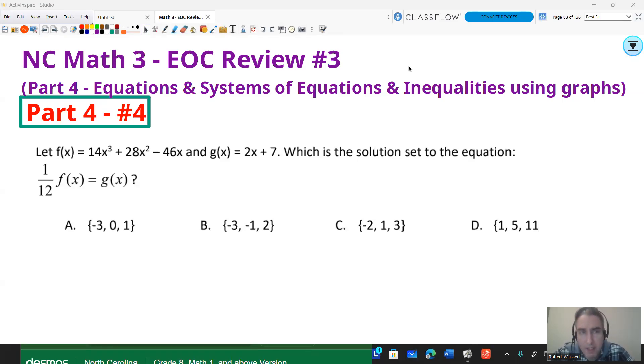Number four, let f(x) equals 14x³ + 28x² - 46x and g(x) equals 2x + 7. What is the solution set to the equation 1/12 f(x) equals g(x)? Now that is multiplied, so really I'm doing 1/12 times that, and I want to set it equal to this. Once again, I want to use a graph to get the answers.